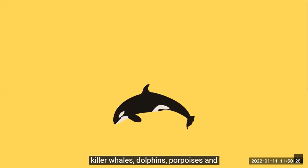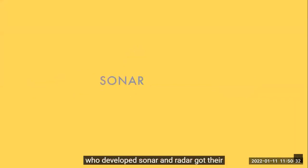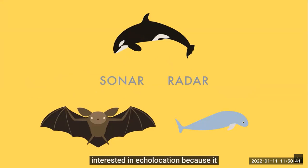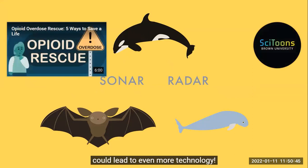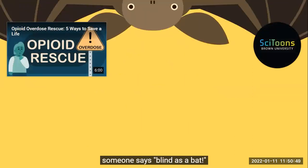Bats are not the only animals that use echolocation — killer whales, dolphins, porpoises, and some birds echolocate as well. Scientists who developed sonar and radar got their ideas from studying echolocation in bats and whales. The U.S. Navy and other research groups are especially interested in echolocation because it could lead to even more technology.